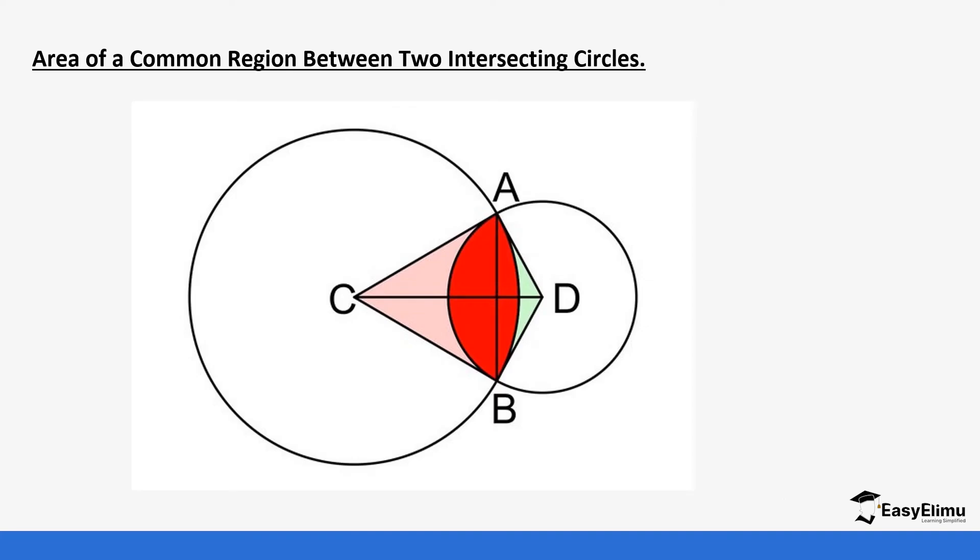There is a common region when two circles are joined together, as you can see from this big circle and this smaller circle. When they intersect, there is a region at which they intersect. That region inside there is what we are looking for the area. To get the area of the intersecting circles, we get the area of the minor segment of the smaller circle and then the area of the minor segment of the bigger circle, and then we add them together.